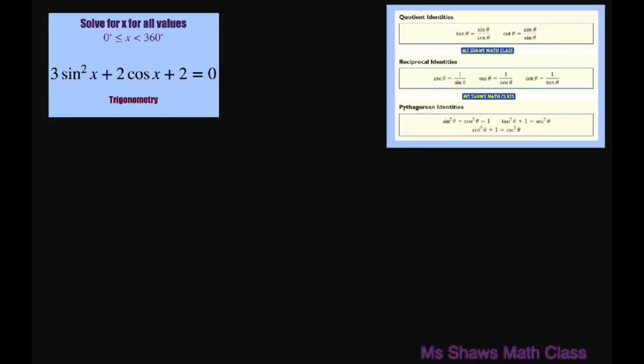So basically, let's go ahead and solve this. Since we have sine squared and a cosine, we're going to have to factor this, so we want them the same.